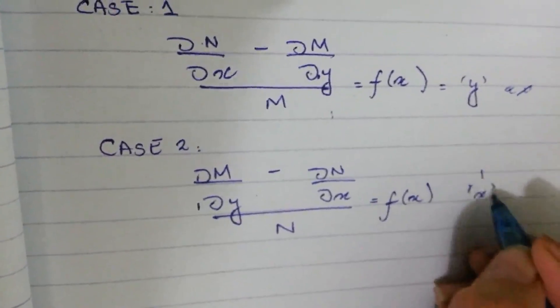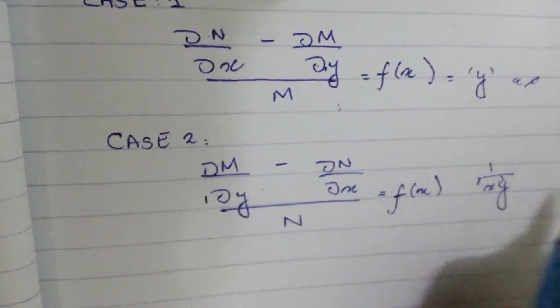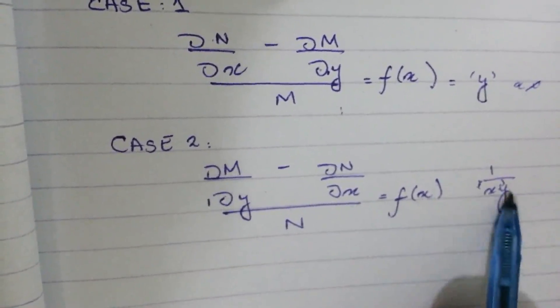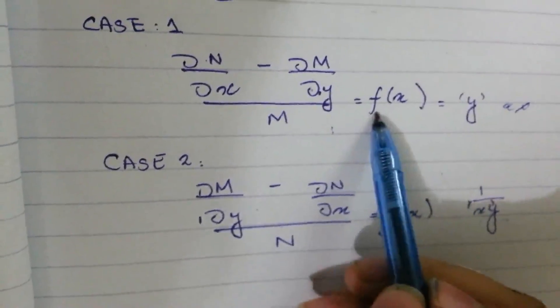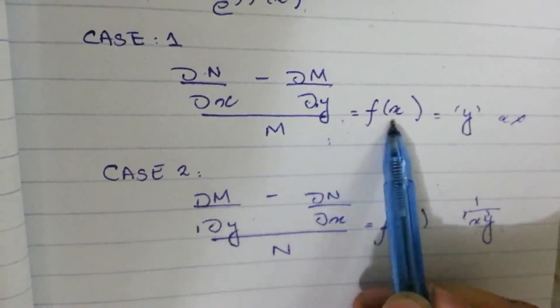For example, if there's something like 1/(xy), this is not applicable because there are both x and y. Then we apply the other rule.